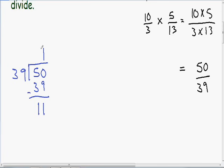So since 39 goes into 50 one time, we are going to have a 1 as our whole number. And since we have 11 left over in our remainder, we are going to have an 11 in our numerator.